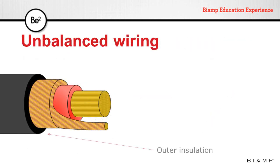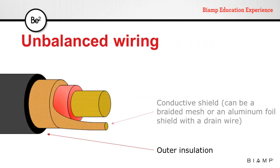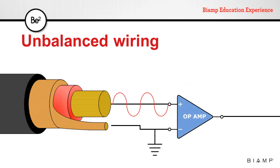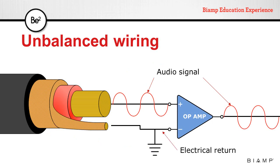In unbalanced wiring, the cable has an outer insulation. Inside, there is a conductive shield that can be a braided mesh or an aluminum foil shield with a drain wire. Inside that, there is an internal insulation and an internal conductor that carries the signal. When we use these types of connections, the audio signal travels on that central conductor directly to the input stage. The shield is connected to the negative input and the ground, serving as an electrical return for that signal.